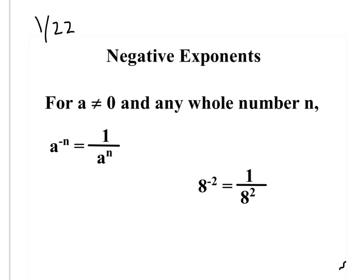Any time you have a raised to the negative n power — any number raised to a negative power — what we do is we flip it. We put it on bottom to get rid of the negative exponent.